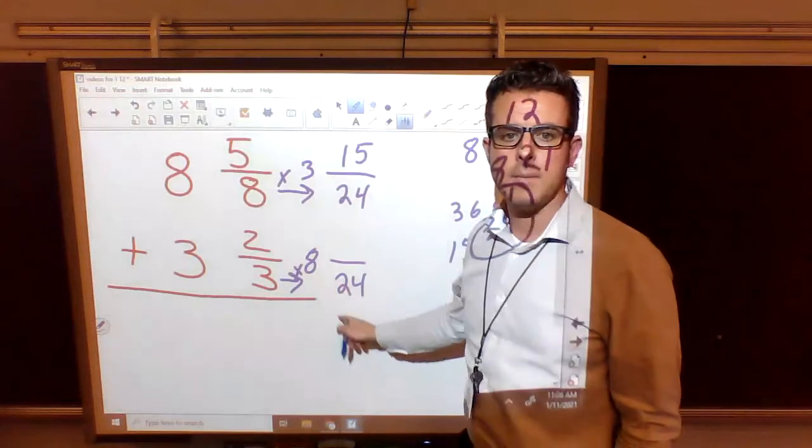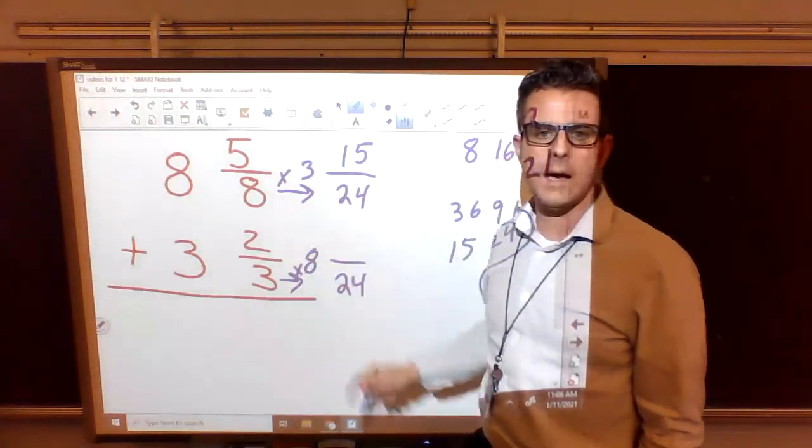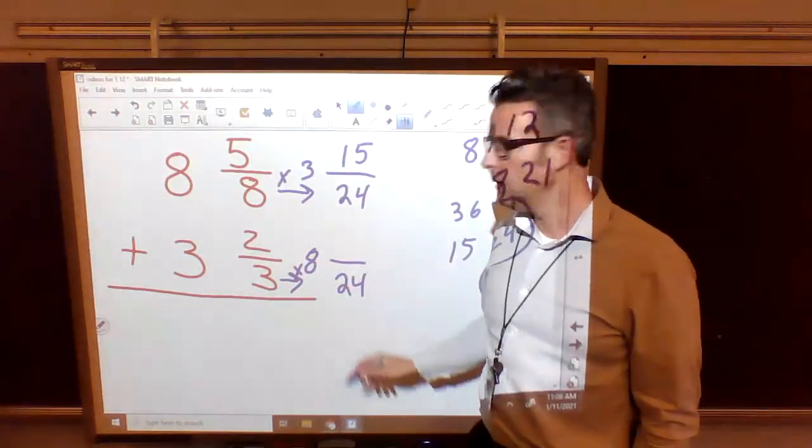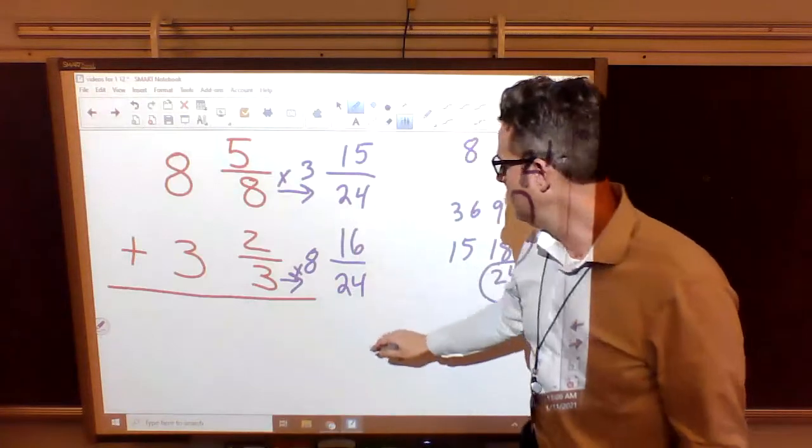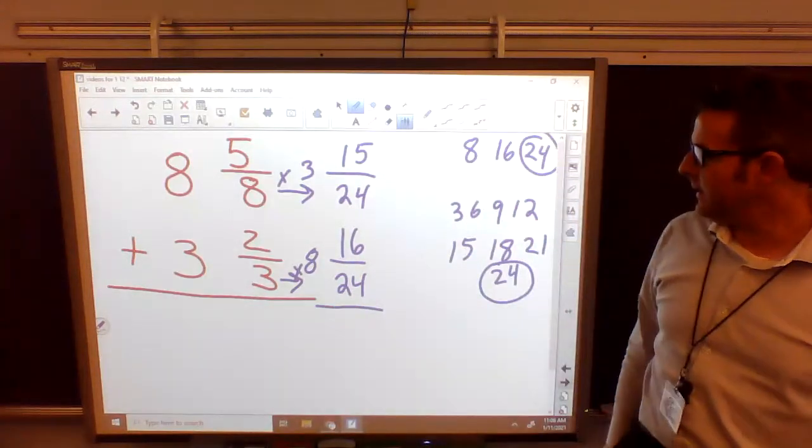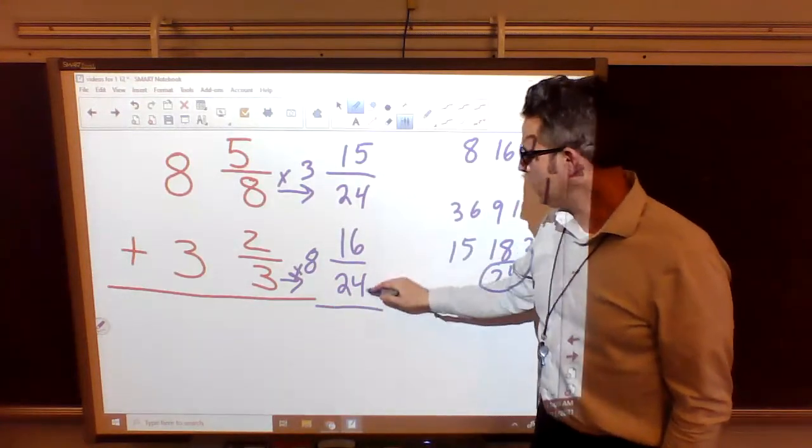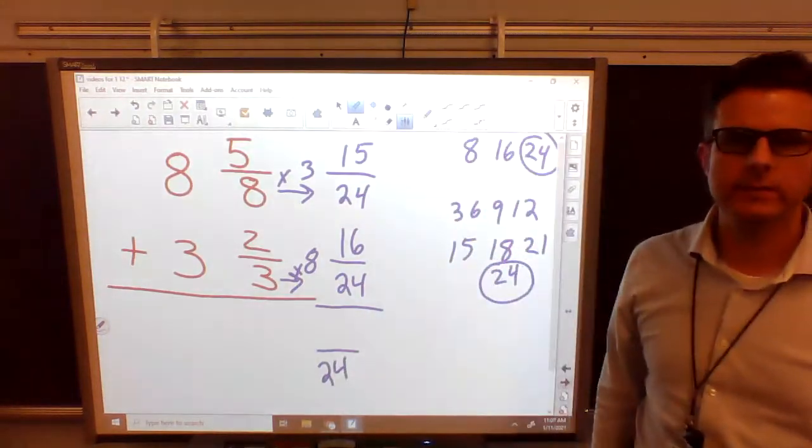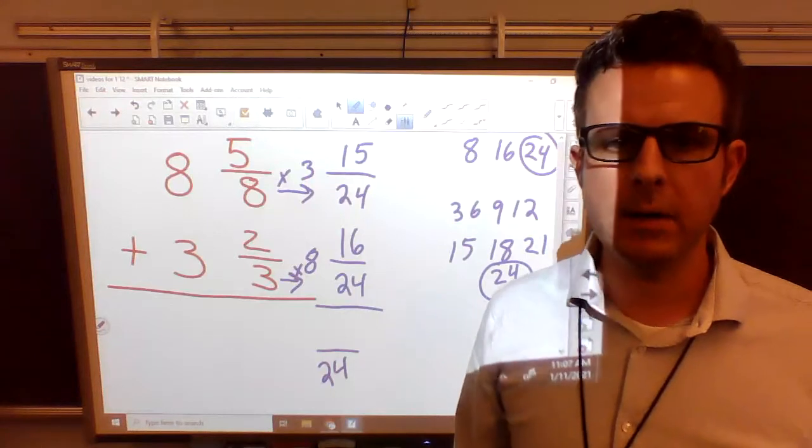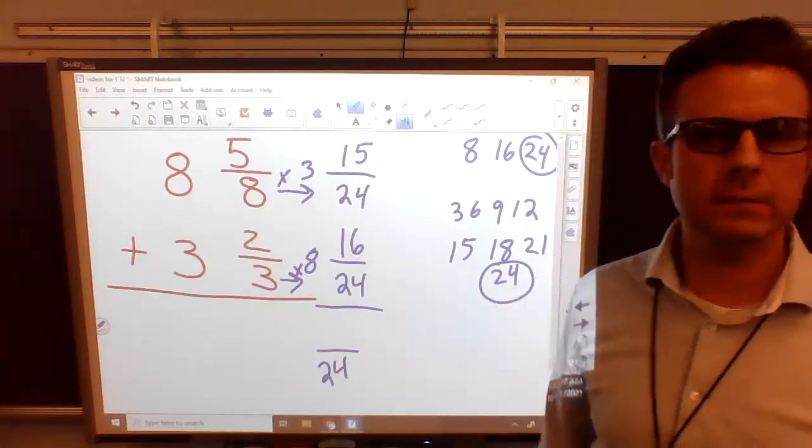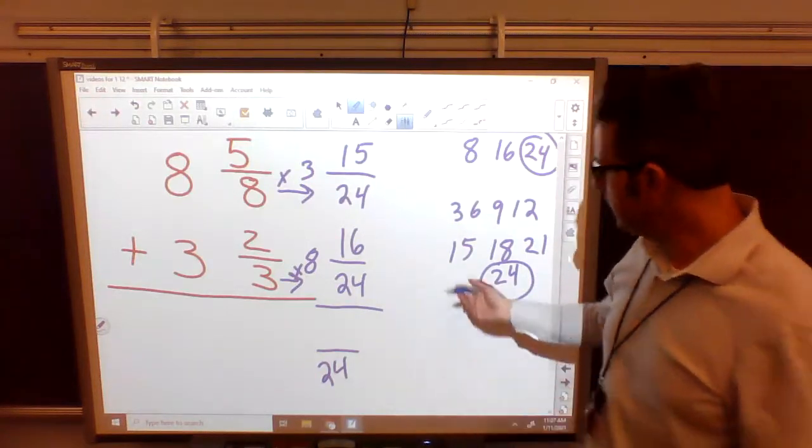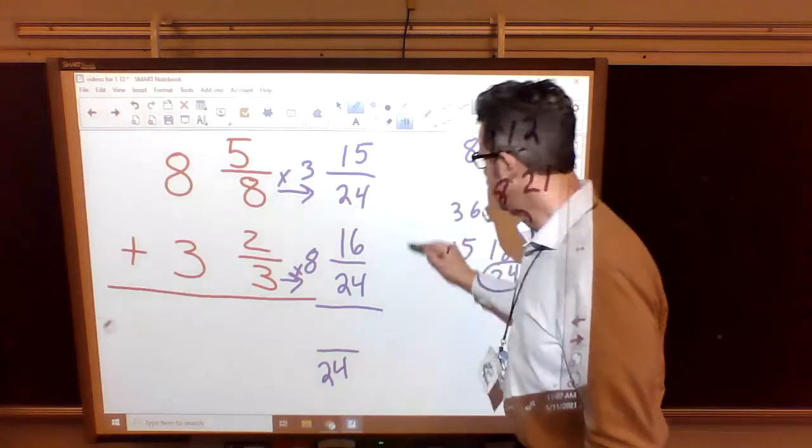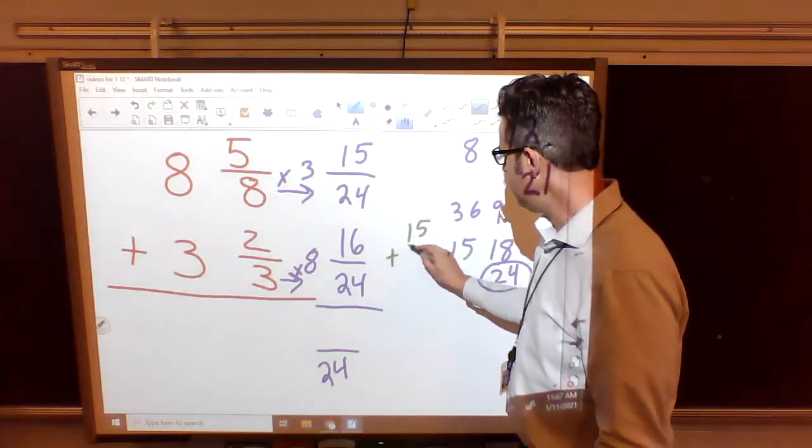Well, if we do it on the bottom, we have to do it on the top. What is 2 times 8? It's 16. So now we have to add 24ths plus 24ths. Our bottom number is still going to be 24ths. Now we have to do the top number, 15 plus 16. Some of y'all can't do that. That's okay. Write it down. What is 15 plus 16?